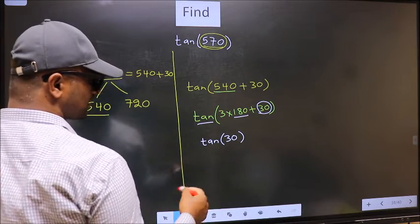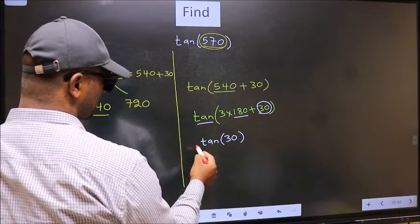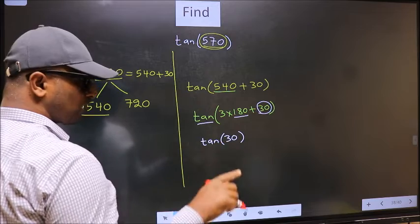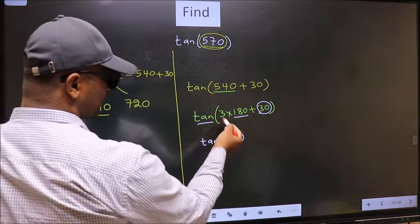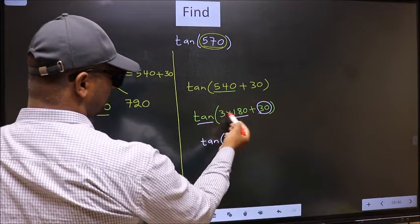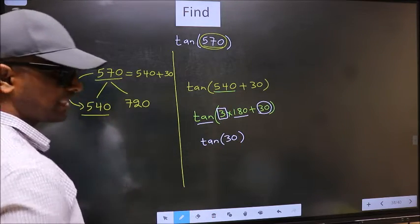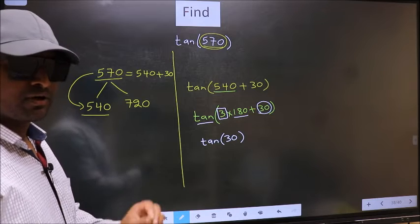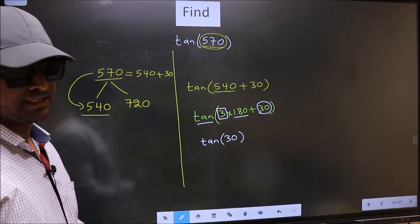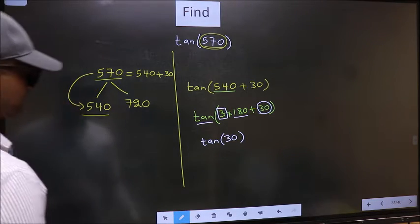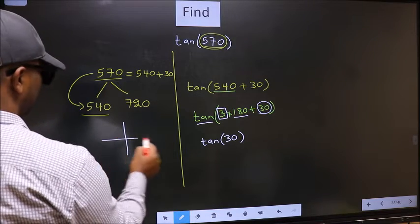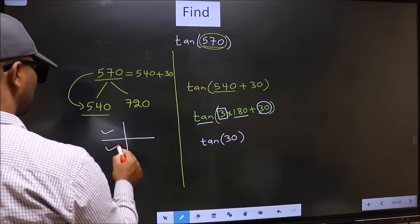Now the question is: will we get here plus or minus? To answer that, we should look at the number before 180, that is 3. And 3 is odd. And all the odd multiples of 180, they lie in either the second or the third quadrant.